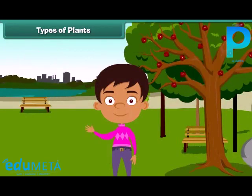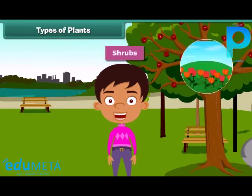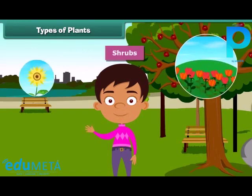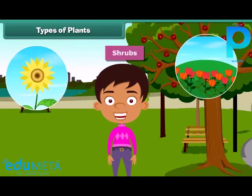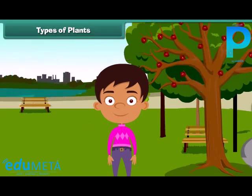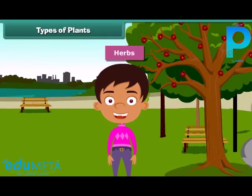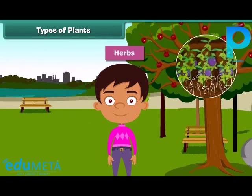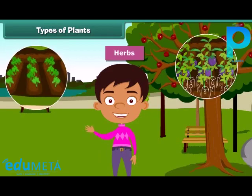Plants which are smaller than trees are called shrubs, such as rose and sunflower plant. Besides, some plants are very small and are called herbs. Brinjal and spinach are examples of herbs.